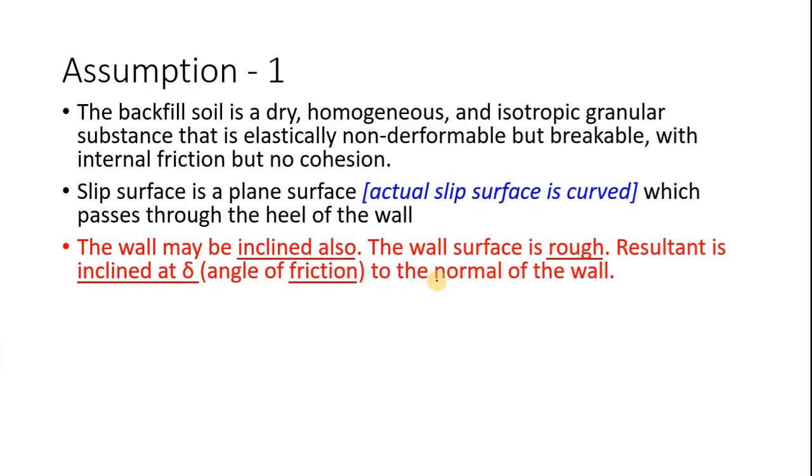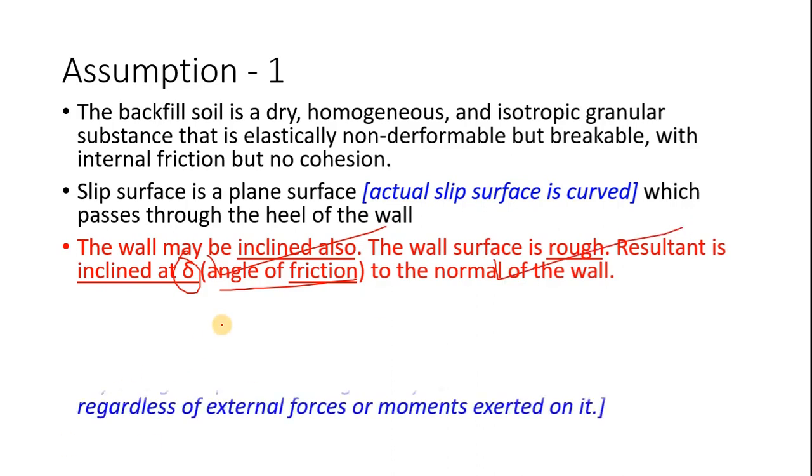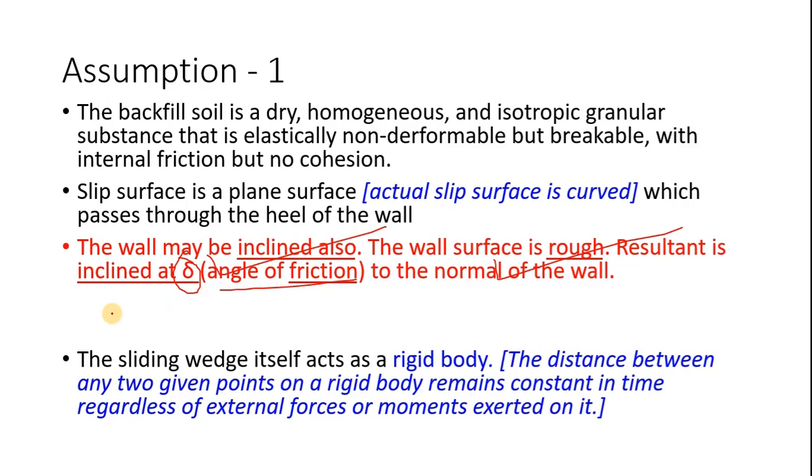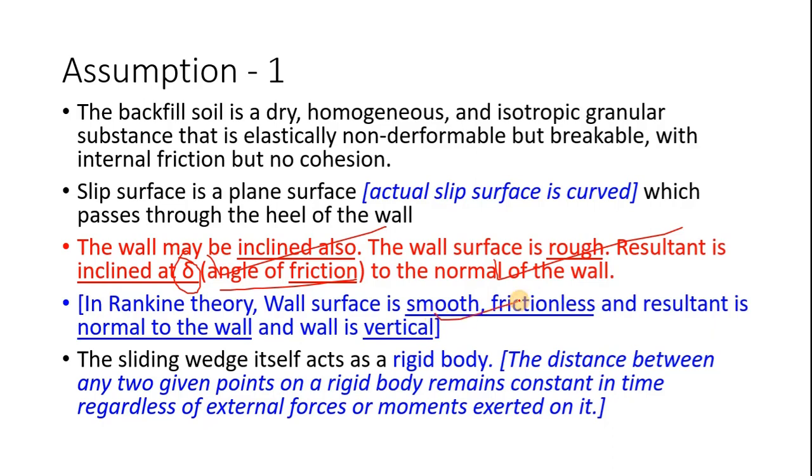Since there is friction, the resultant is not perpendicular to the wall but inclined at angle delta, which is the angle of friction to the wall. The wall may be inclined or vertical and may be rough or smooth. It is applicable for both. In contrast, the wall is smooth, frictionless, and normal to the backfill with resultant normal to the wall in case of Rankine earth pressure theory.